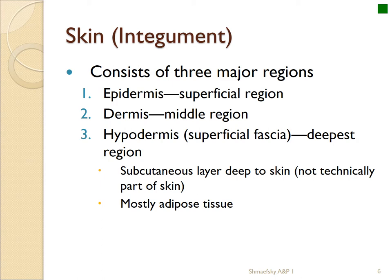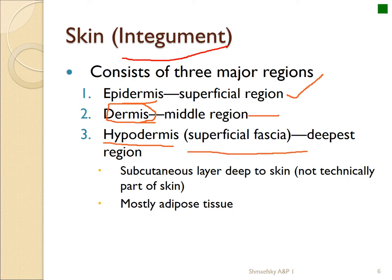As we start looking at the structure of the skin, the skin itself is called the integument, and the system is the integumentary system. The integument is composed of three regions: the superficial region called the epidermis (meaning 'upon the skin'); the middle region called the dermis or true skin; and the hypodermis, from which the term 'hypodermic needle' comes. The hypodermis is underneath the skin and is part of a large region called the fascia, also called superficial fascia, typically composed of adipose tissue.